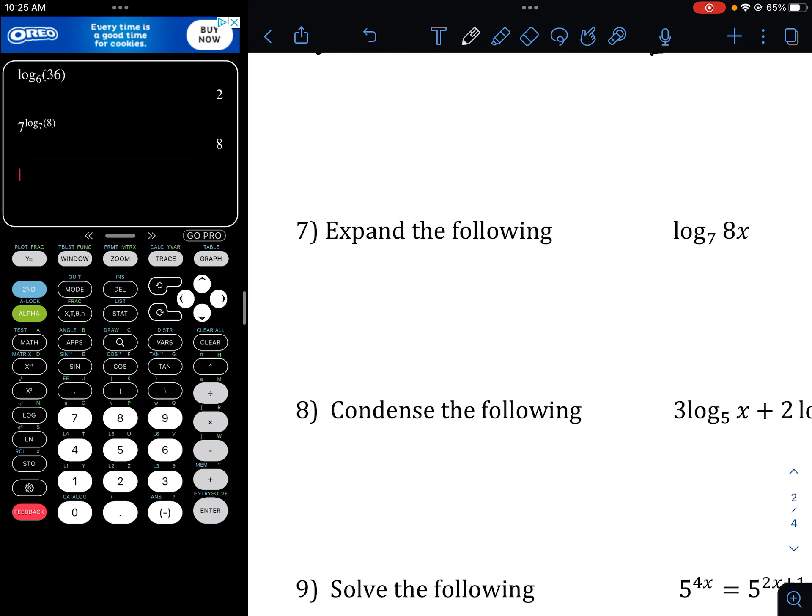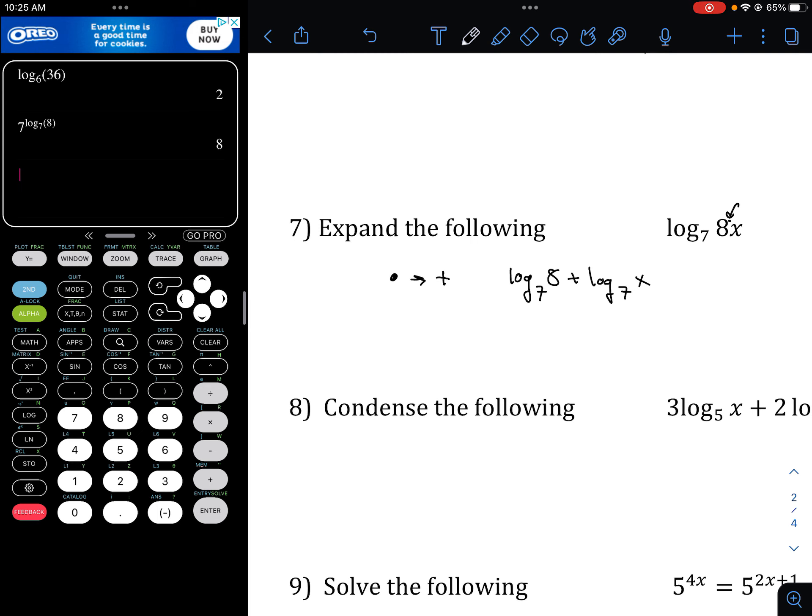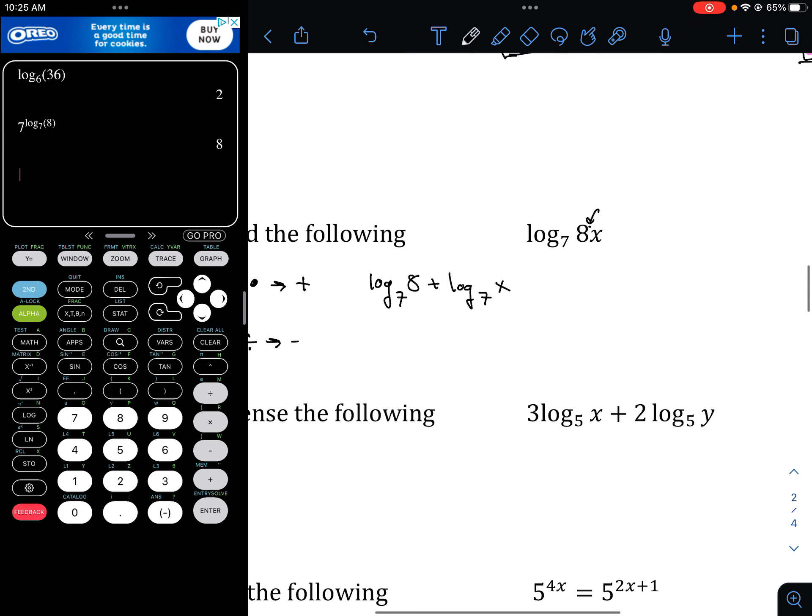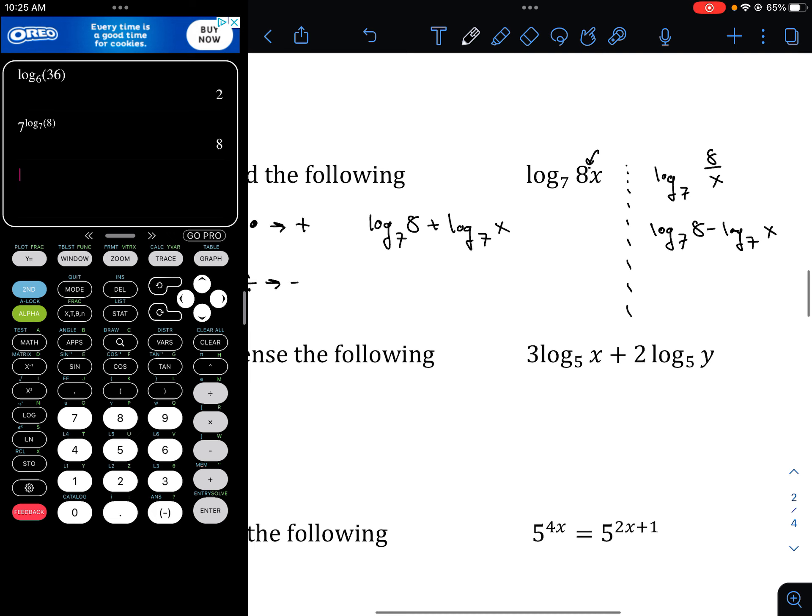As for expanding and condensing, remember that multiplication becomes addition. So, we have log base 7 of 8 plus log base 7 of x. We have that multiplication. We have that multiplication in between there. Also, just to know that division becomes subtraction. So, little example. If you had log base 7 of 8 over x, that would simply be log base 7 of 8 minus log base 7 of x. Maybe have those examples written down as well.